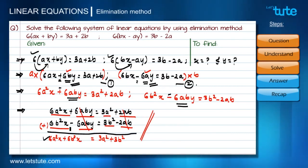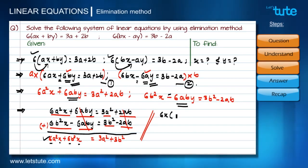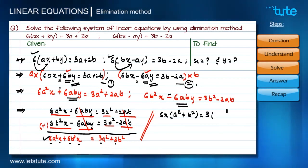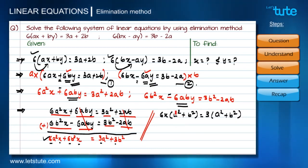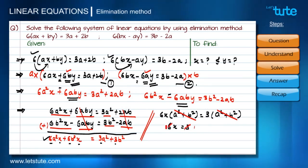From the result, we take six and x common from the left-hand side, giving six·x·(a² + b²). On the right-hand side, taking three common gives three·(a² + b²). The (a² + b²) terms cancel from both sides, leaving six·x equals three, so x equals one-half.